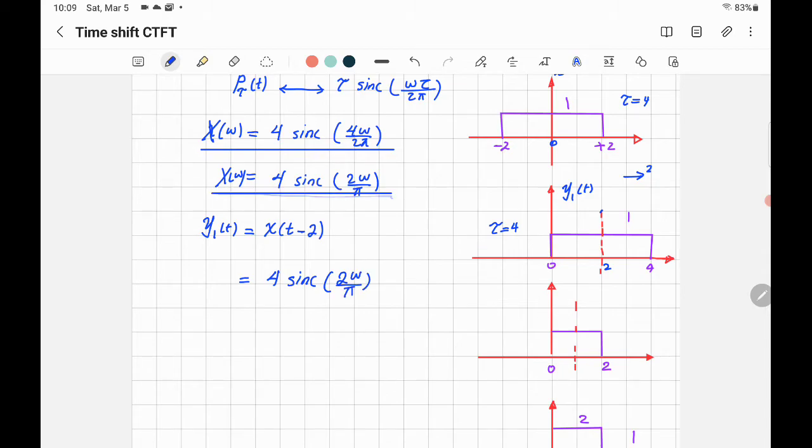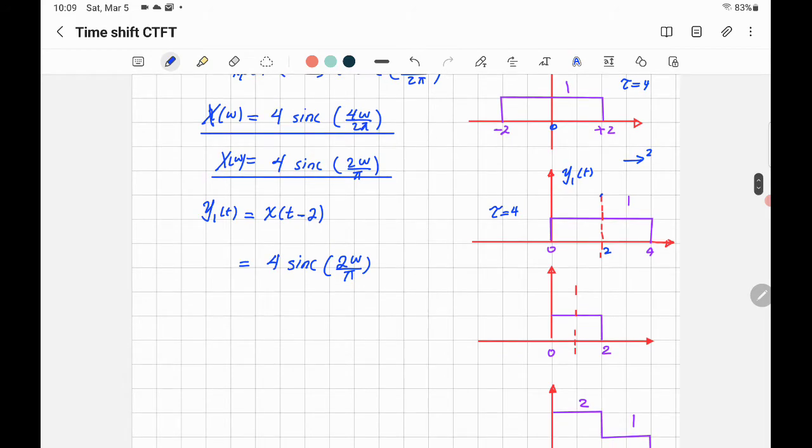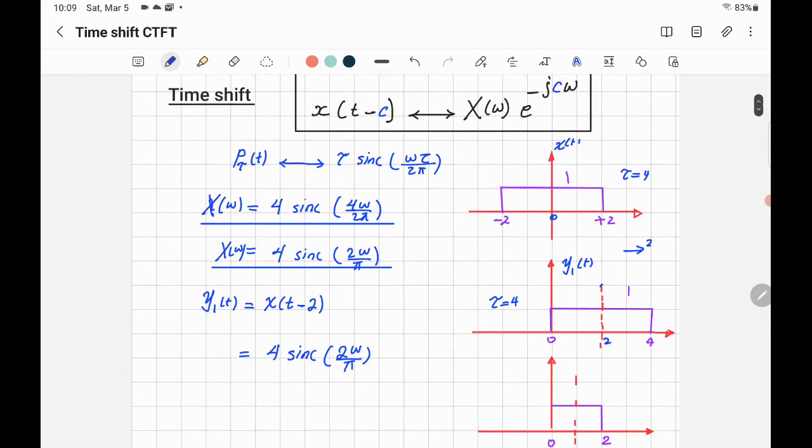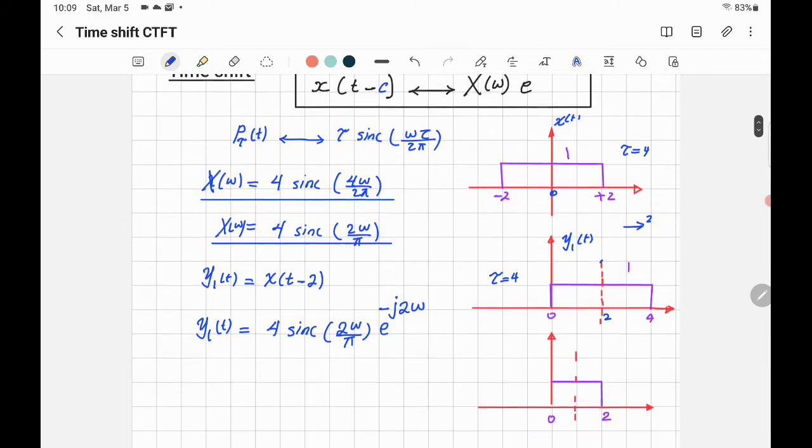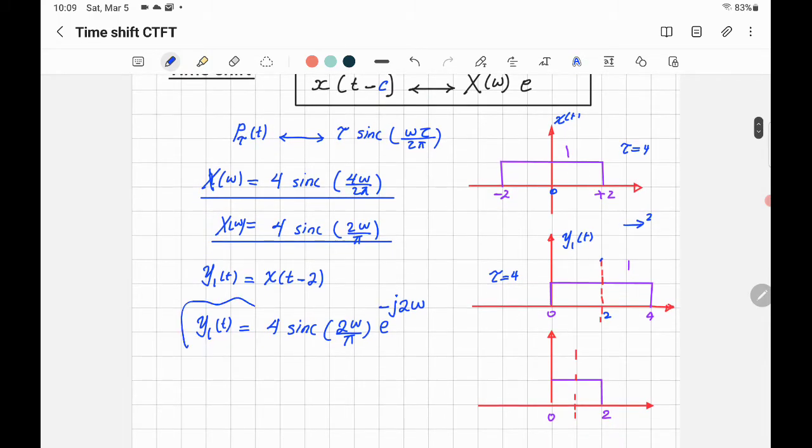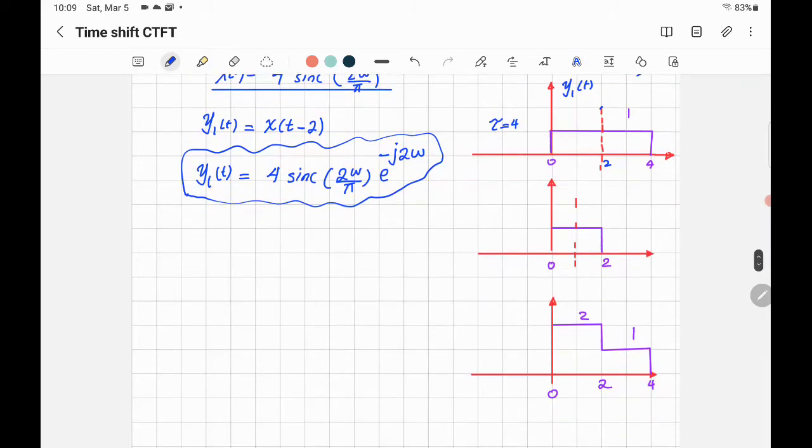So we'll write 4 sinc(2ω/π). I'm using the simplified form here. And then shifted by negative 2, and that negative c will be e^(-j·2ω). So that will be Y₁(ω). Okay, so if you understand that, let's do another example for another rectangular pulse. This signal, call it Y(t).